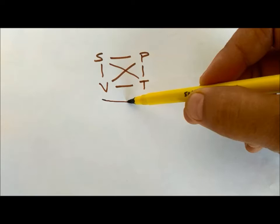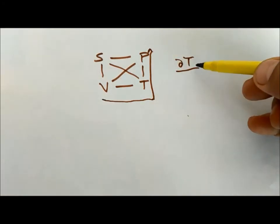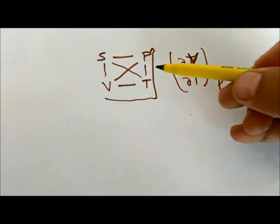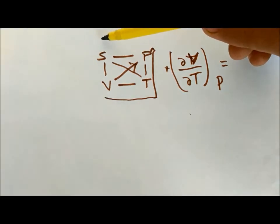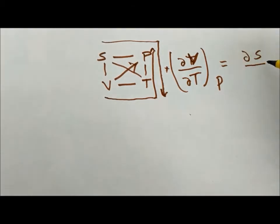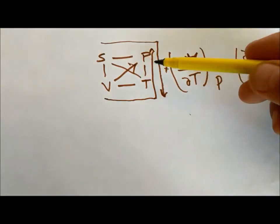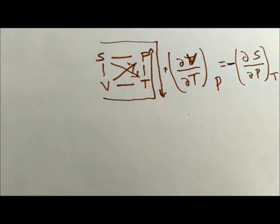Now we go from V to T. When we go from V to T it is del V over del T at constant P. When the arrow goes up it is with a plus sign. It is equal to del S over del P at constant T. When we go from S to T the arrow goes down, so it is with a negative sign. This is your third Maxwell relation.